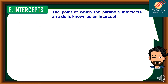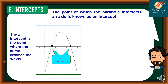Let's move on now to the intercepts. This is the point at which the parabola intersects an axis, known as the intercept. Consider this illustration — the x-intercept is the point where the curve crosses the x-axis. In this particular example, there are two points where the parabola crosses the x-axis.